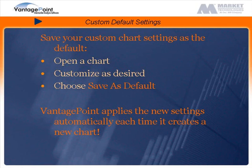First, we will open a chart. Then, we will customize as desired. We will apply a different selection of indicators and change the background color. Then, we will choose to save as default. Vantage Point then automatically applies our new default settings the next time it creates a new chart.